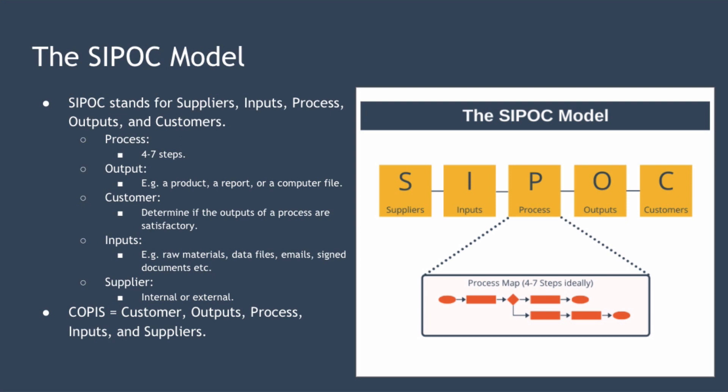Next we have Inputs — those items supplied by the suppliers and required by the process in order to produce its outputs. Examples of inputs include spreadsheets, raw materials, data files, emails, signed documents, or an output from another process. Finally we have Supplier — a supplier provides one or more inputs to the process and can be internal or external to your organisation. When creating a SIPOC document we usually begin by considering the process, but sometimes the only reason to change a process is to meet customer needs — this is known as being customer driven, and that approach is called COPUS: Customer, Outputs, Process, Inputs, and Suppliers. Note that COPUS is simply SIPOC spelt backwards.